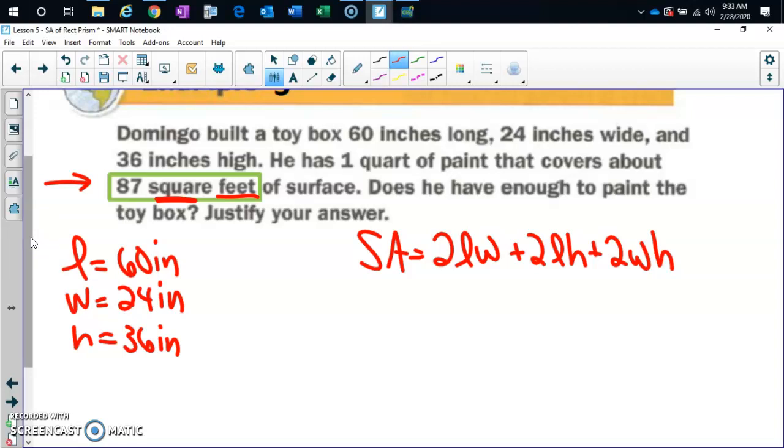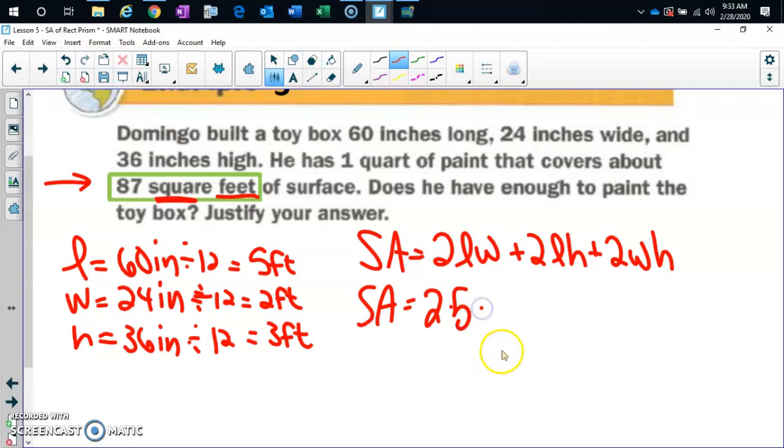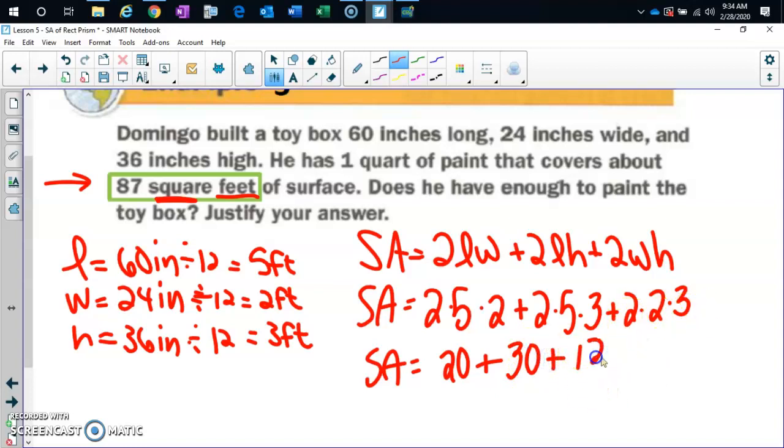Convert them to feet. Very good, because our paint is telling us square feet. So how many feet is 60 inches? Divide it by 5, or divide it by 12, and I get 5 feet. Divide this by 12, and I get 2 feet. And divide this by 12, and I get 3 feet. All right. Go back to surface area. Formula. 2 times—notice I have labeled these so I know which one is which. 5 times 2 plus 2 times 5 times 3 plus 2 times 2 times 3. When you punch this into your calculator, I'm just going to do it mentally. 4 times 5 is 20 plus 6 times 5 is 30 plus 4 times 3 is 12.